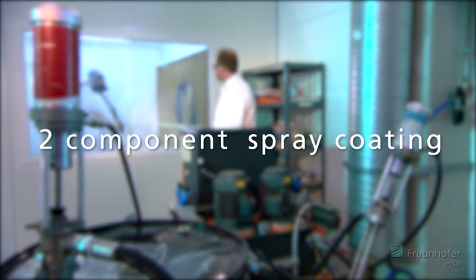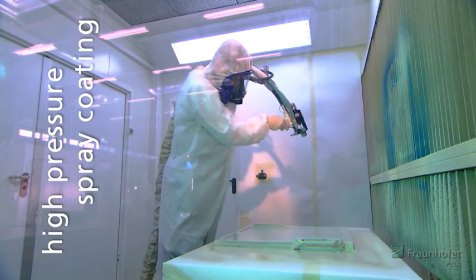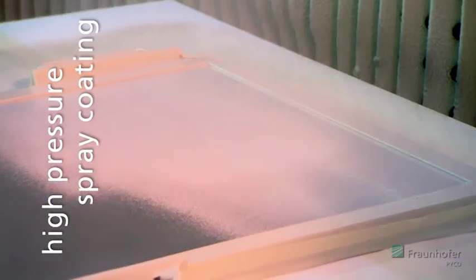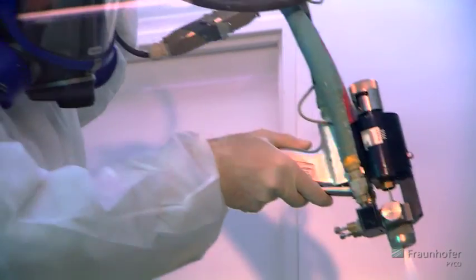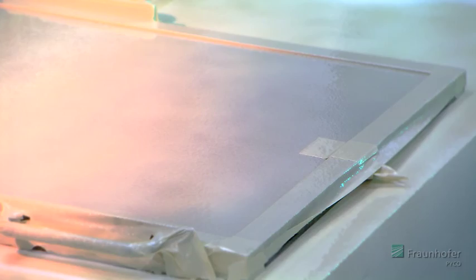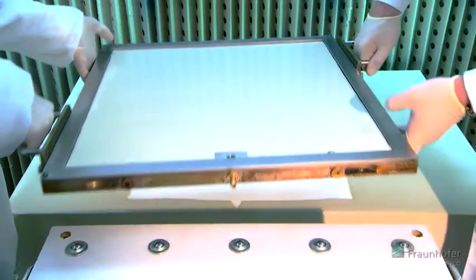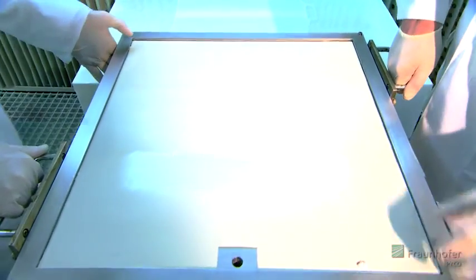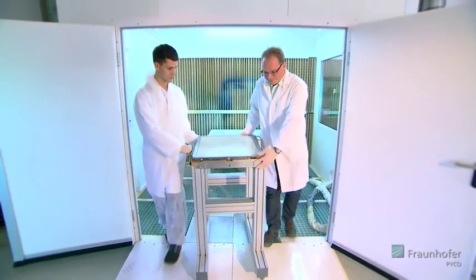The two-component high-pressure spray coating method developed at PYCO is used for processing highly reactive resin systems. It is possible to adjust the mixing ratio in multiple ways so that different kinds of resin systems can be processed, such as polyurethanes, epoxy resins, or unsaturated polyesters. Typically, this technology is used for coating plain surfaces.